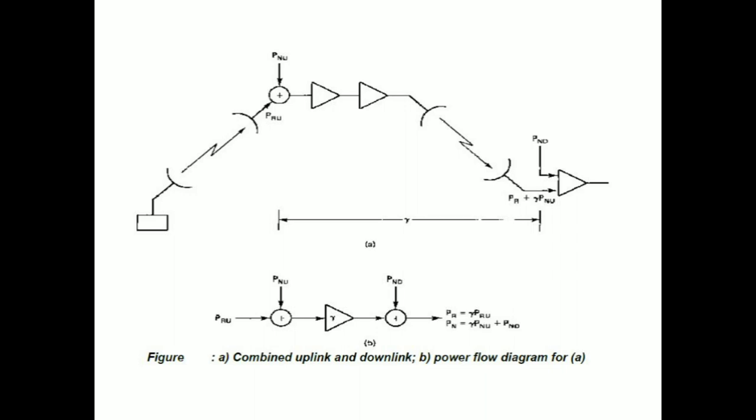When the signal and the noise travel through this system to the earth station, the power received is gamma times PRU, and the noise PNU is also multiplied by gamma, giving gamma times PNU. There is also electronic circuitry at the earth station introducing an additional noise PND. So the total power received at the downlink is gamma times PRU, and the total noise is gamma times PNU plus PND.